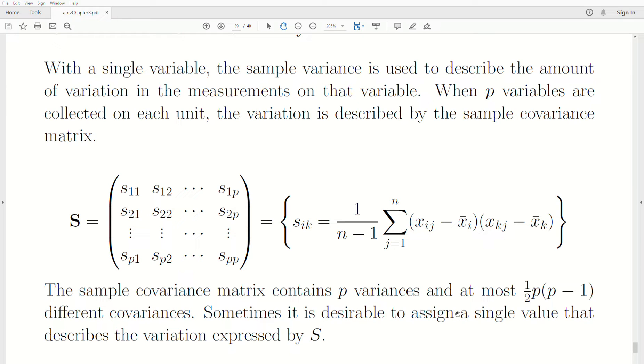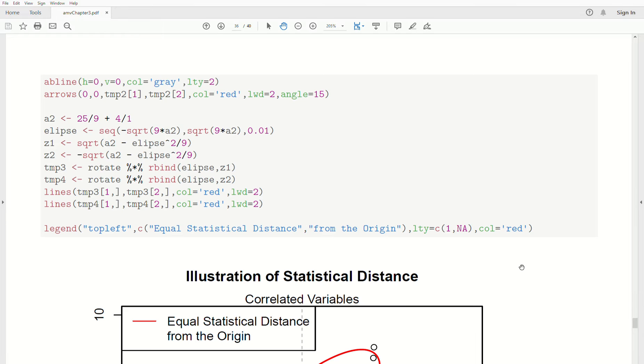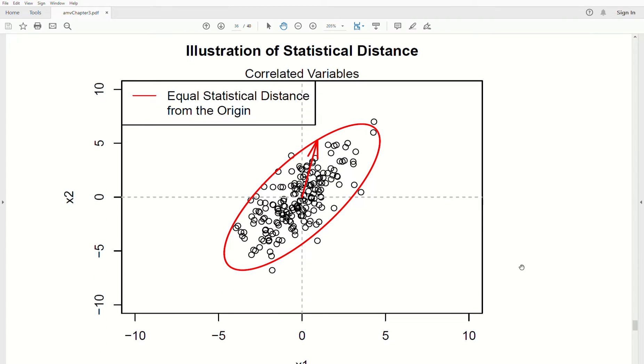So sometimes it's desirable to assign a single value that describes the variation expressed by S. Let's go back to the previous video. When we looked at these plots here, when we were looking at Mahalanobis distance, notice that the data is sort of encompassed by an ellipse. This is two dimensions, so it's an ellipse. But in three dimensions, it would be an ellipsoid. Now, look at the volume of this ellipse.